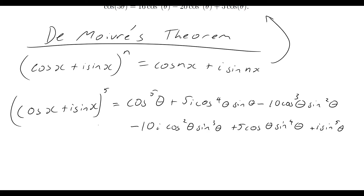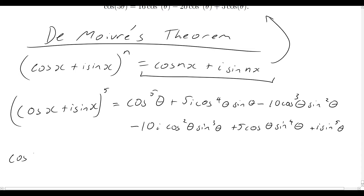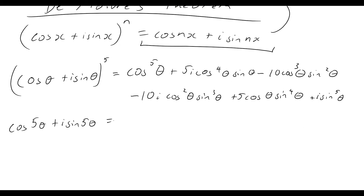Now we can have a look at our left-hand side. According to de Moivre's theorem, we can write that as cos(5x) plus i·sin(5x). So I can replace the left-hand side with cos(5θ) plus i·sin(5θ) — and I've just noticed we should have been using theta throughout for our problem. This is going to be equal to the entire right-hand side of the expansion above.